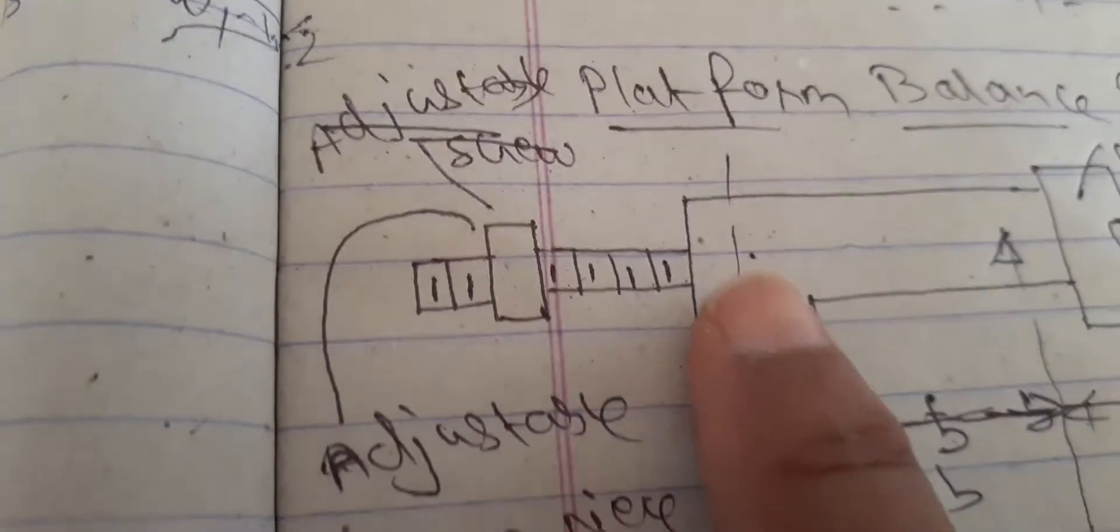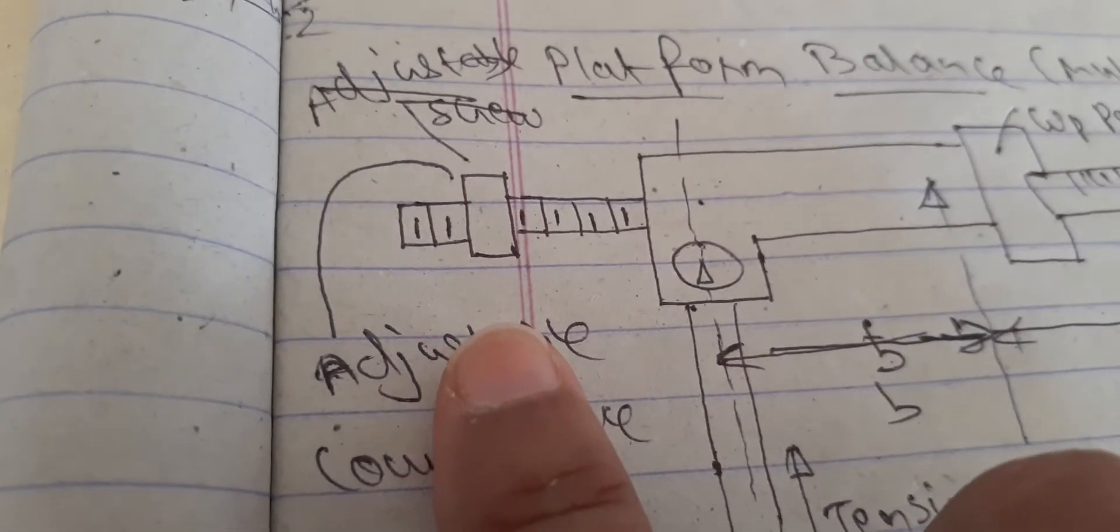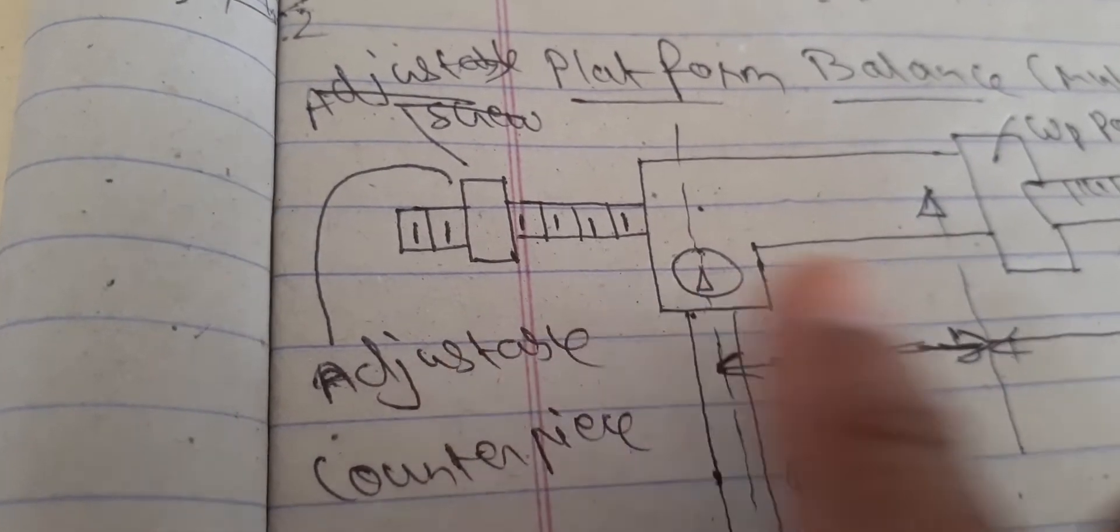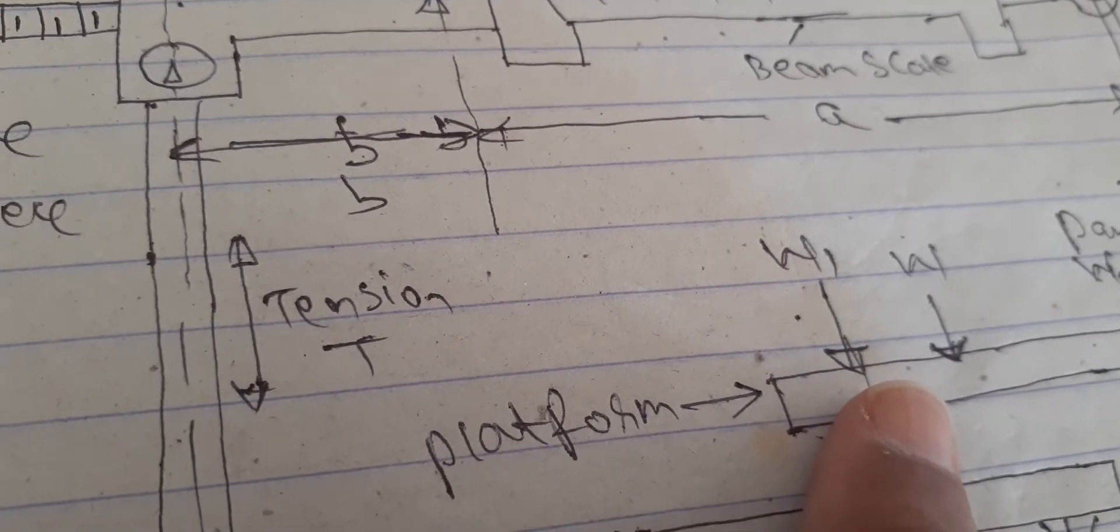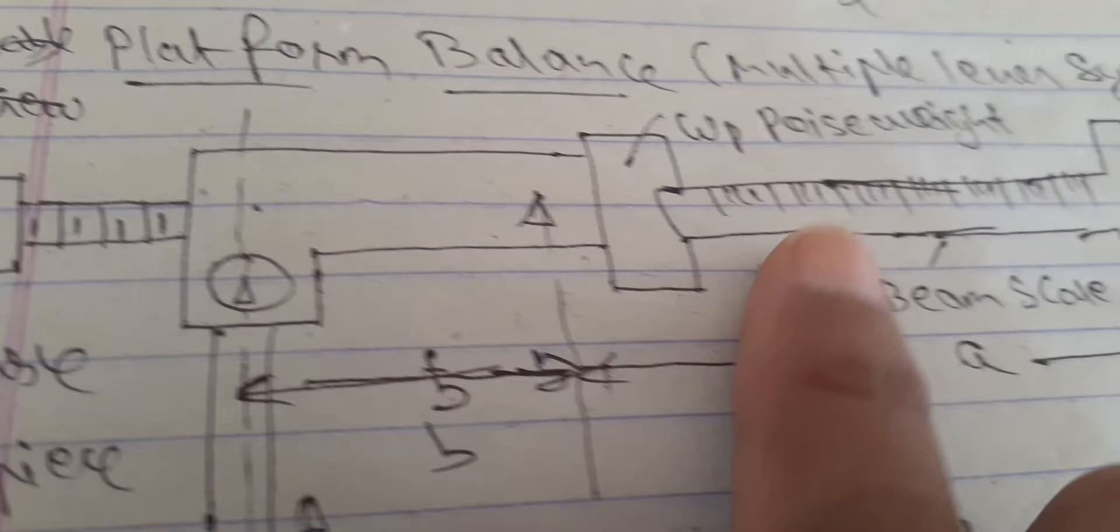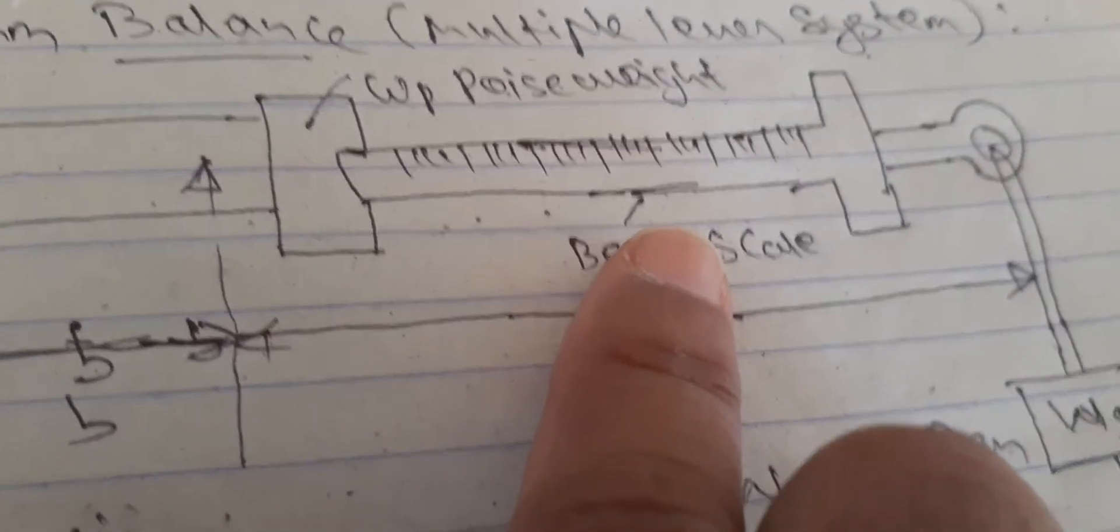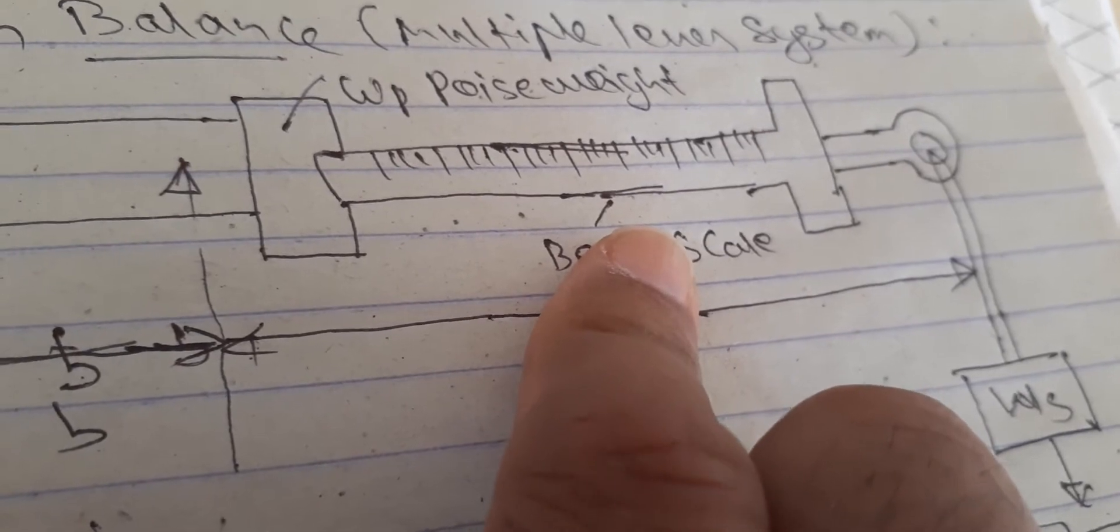The system is provided with adjustable counter poise before the unknown load W is applied to the platform. The poise weight W suffix p is set to zero in the beam scale. Initial zero balance is to be set. In order to simplify this system, this weight W...